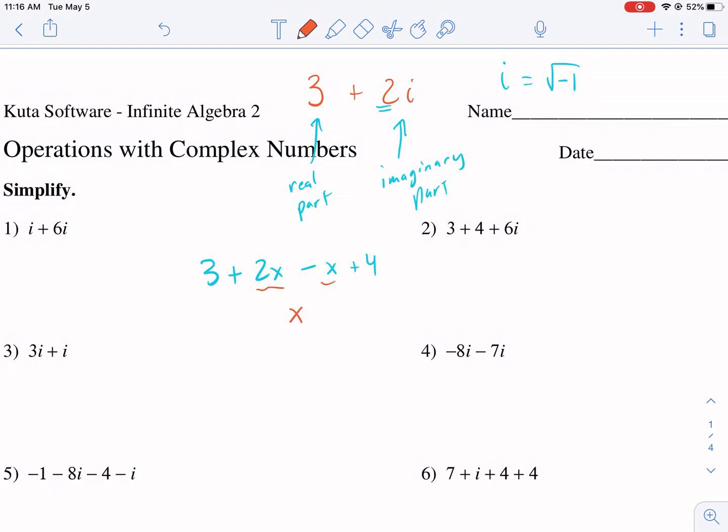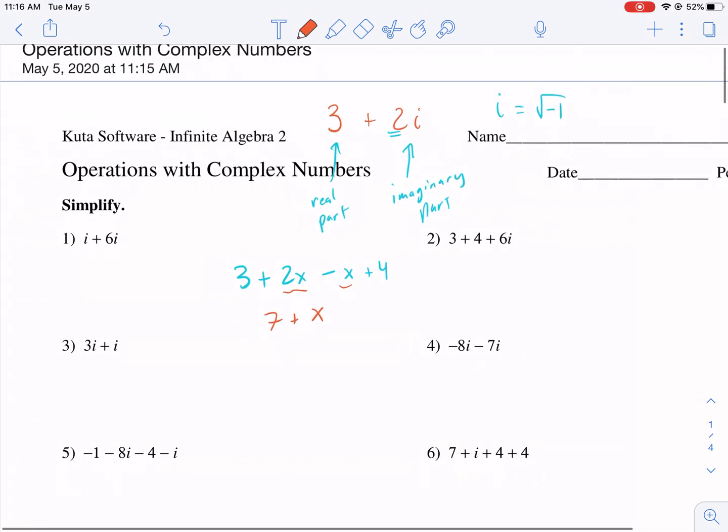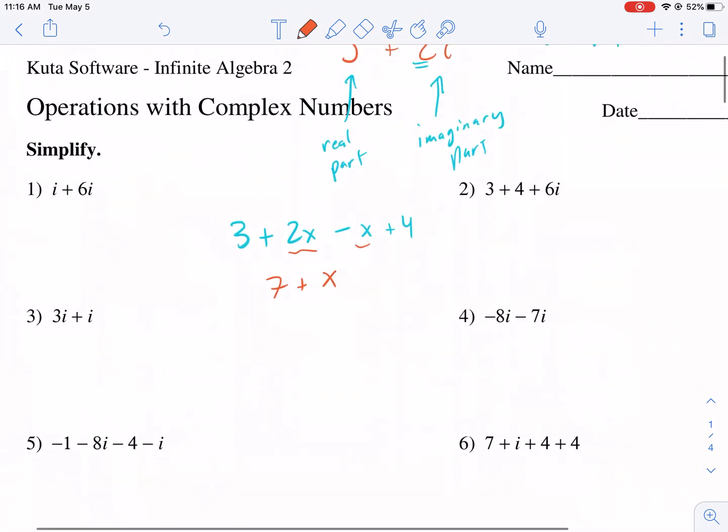We'd get one x, and then 4 + 3 is 7, so we get 7 + x here. It's very much in the same way as these problems.